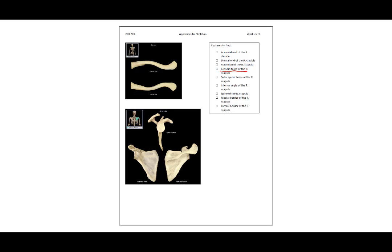The glenoid fossa, or glenoid cavity, is the actual socket, although it is shallow. The subscapular fossa of the right scapula is this entire deep surface of the scapula. The inferior angle of the right scapula is this lower pointy portion. The spine of the right scapula can be seen nicely right here.